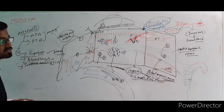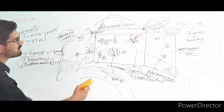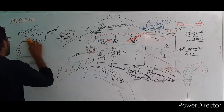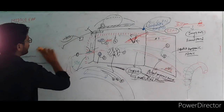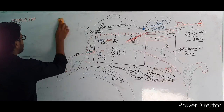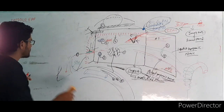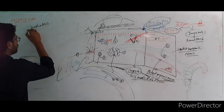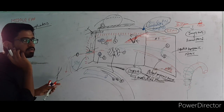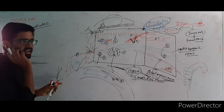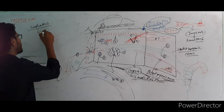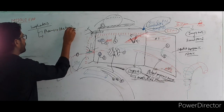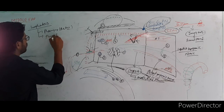The venous drainage of the middle ear is to the pterygoid venous plexus. The lymphatic drainage goes to the parotid lymph nodes and the retropharyngeal lymph nodes.